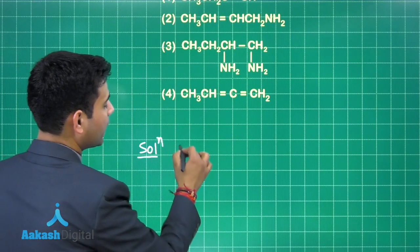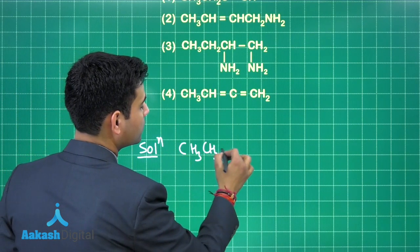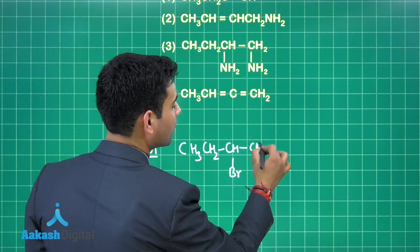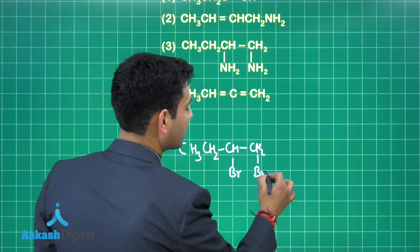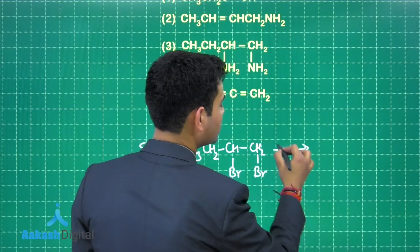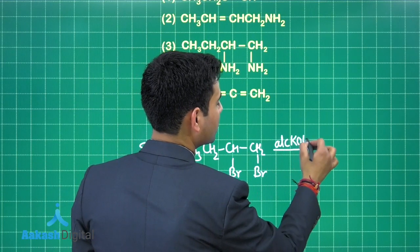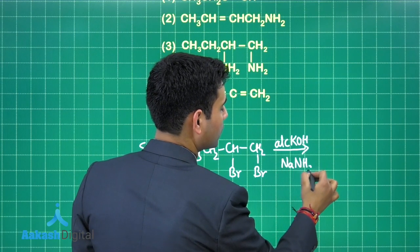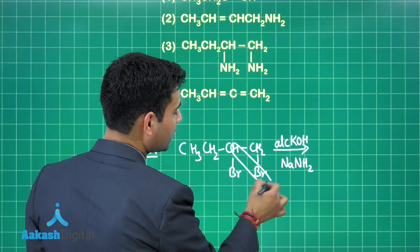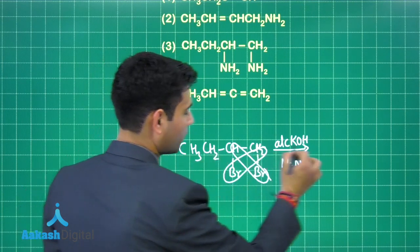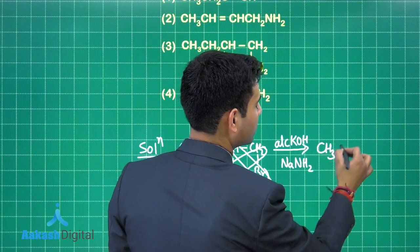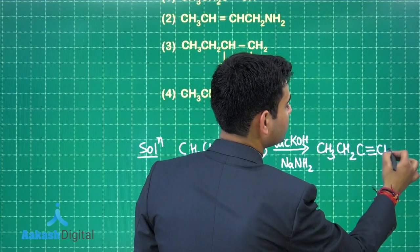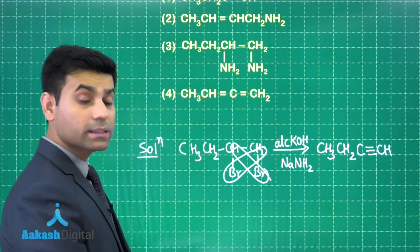Here we have CH3, CH2, CHBR, CH2BR. Here we are using alcoholic OH and then NaNH2. So HBR will be released from here and HBR will be released from here also, giving us butyne. This is the butyne formed here.